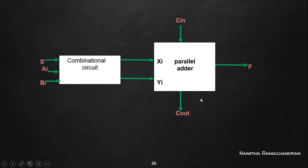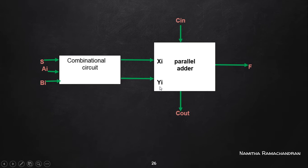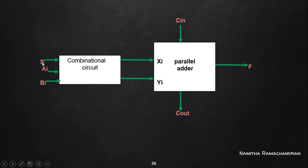This combinational circuit actually decides the value of the Xi and Yi inputs. The circuit may be different for different functionalities. For this combinational circuit, we need to provide inputs like Ai, Bi, and the selection variable. These are the actual given inputs: A input, B input, and the selection variable.